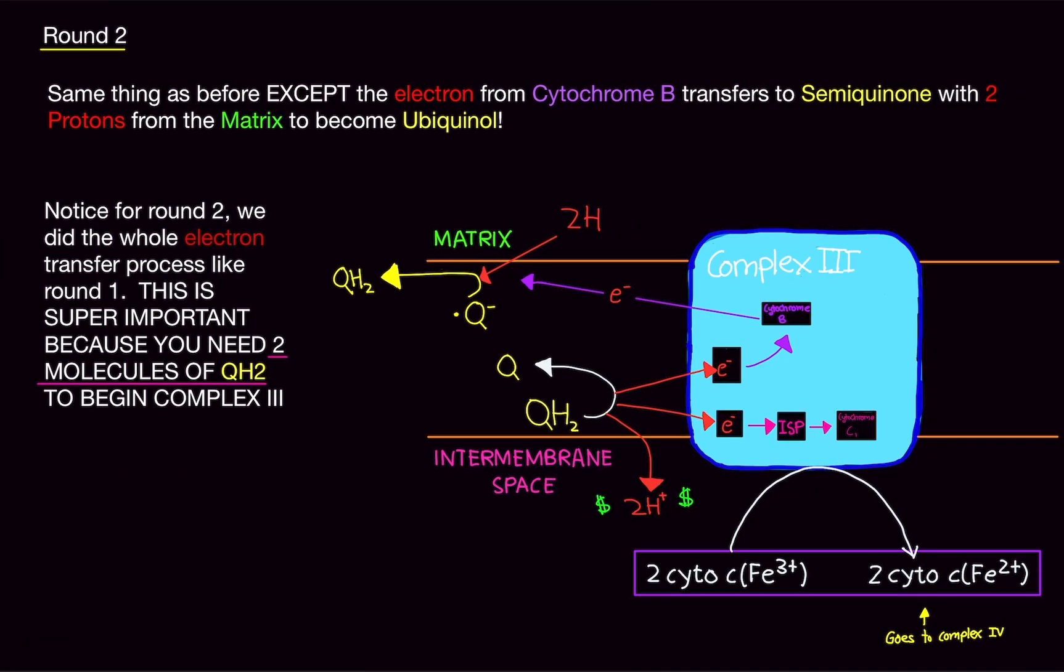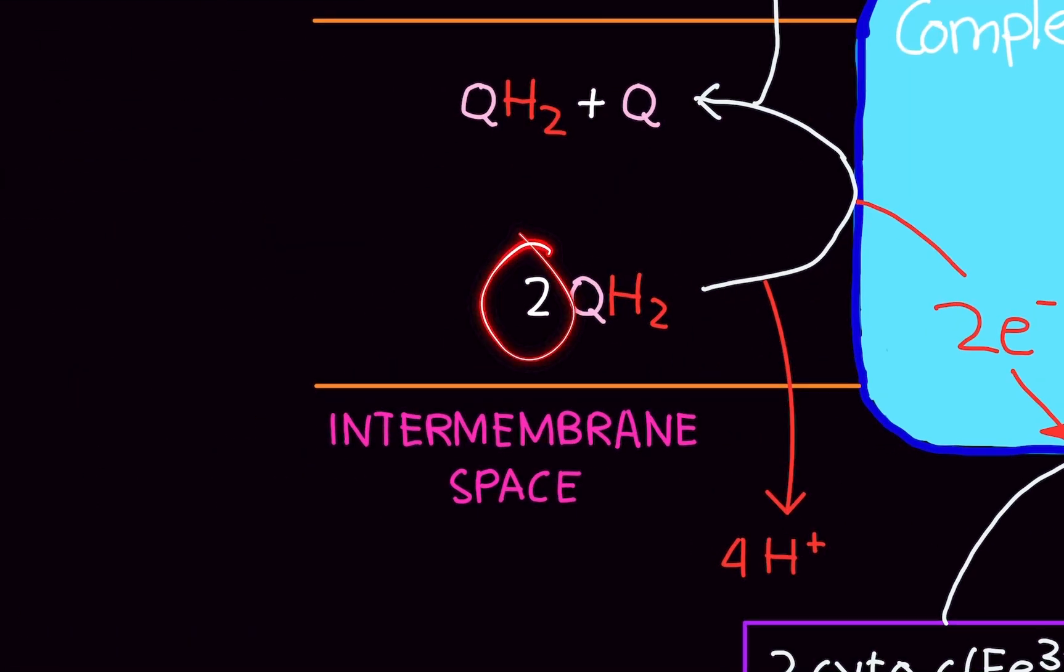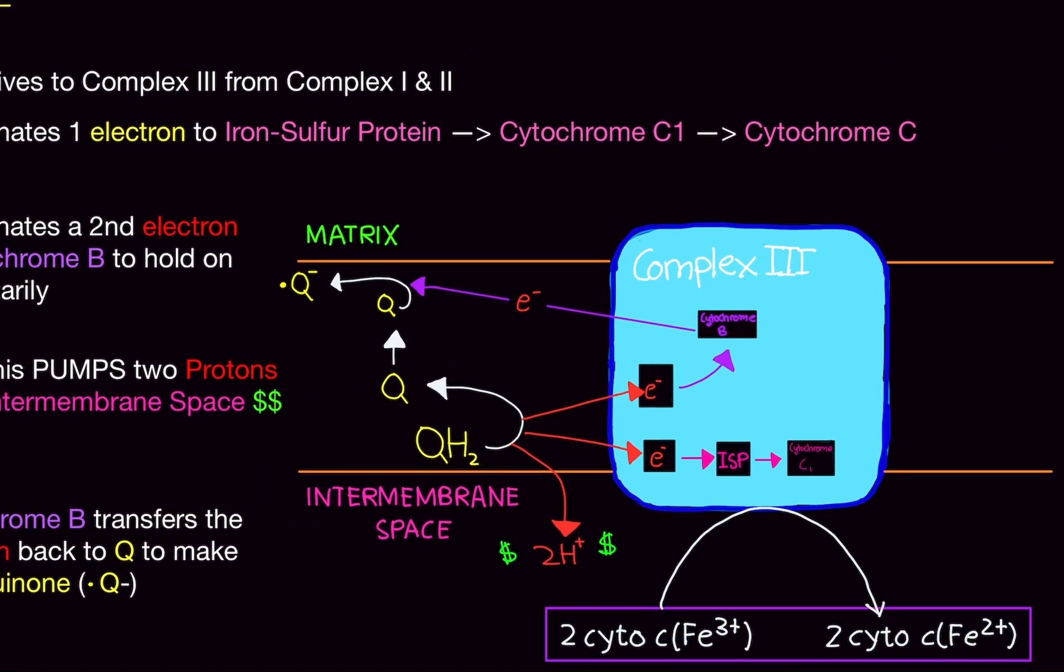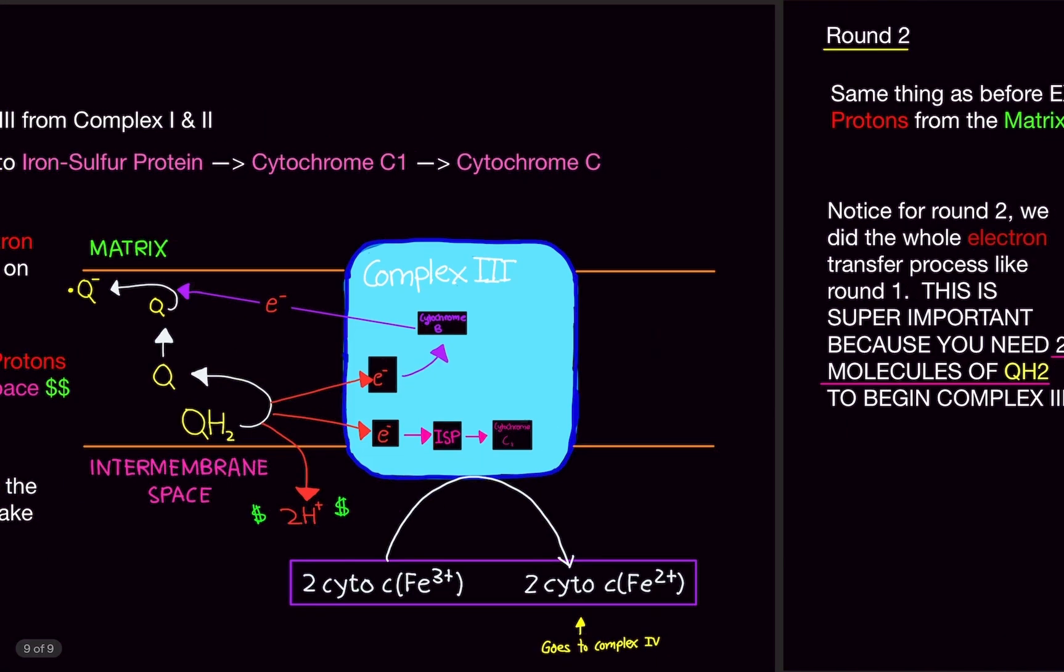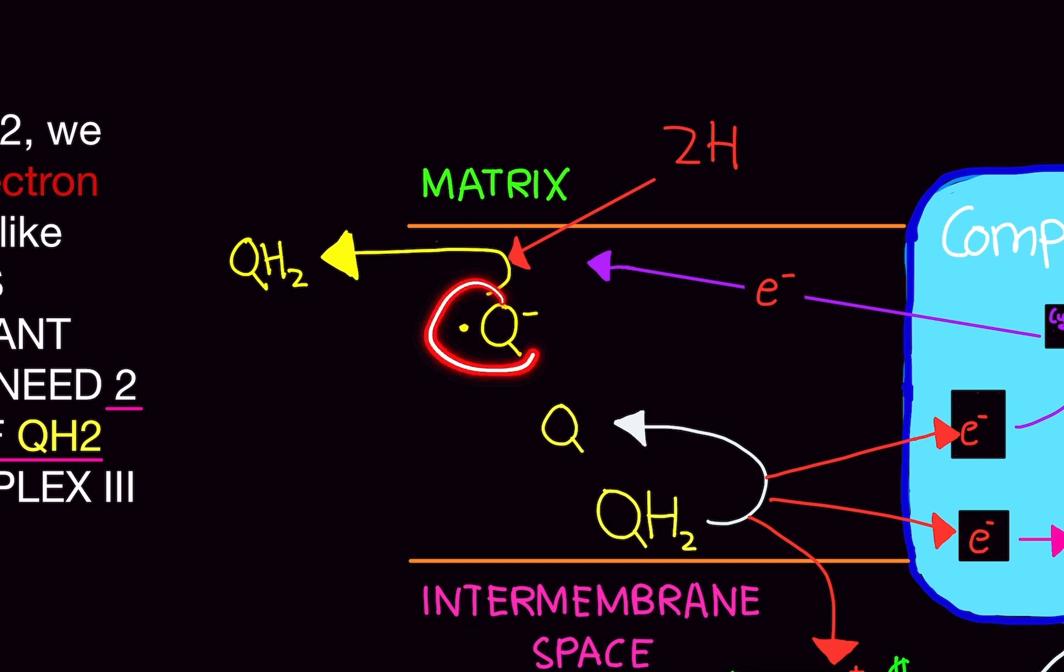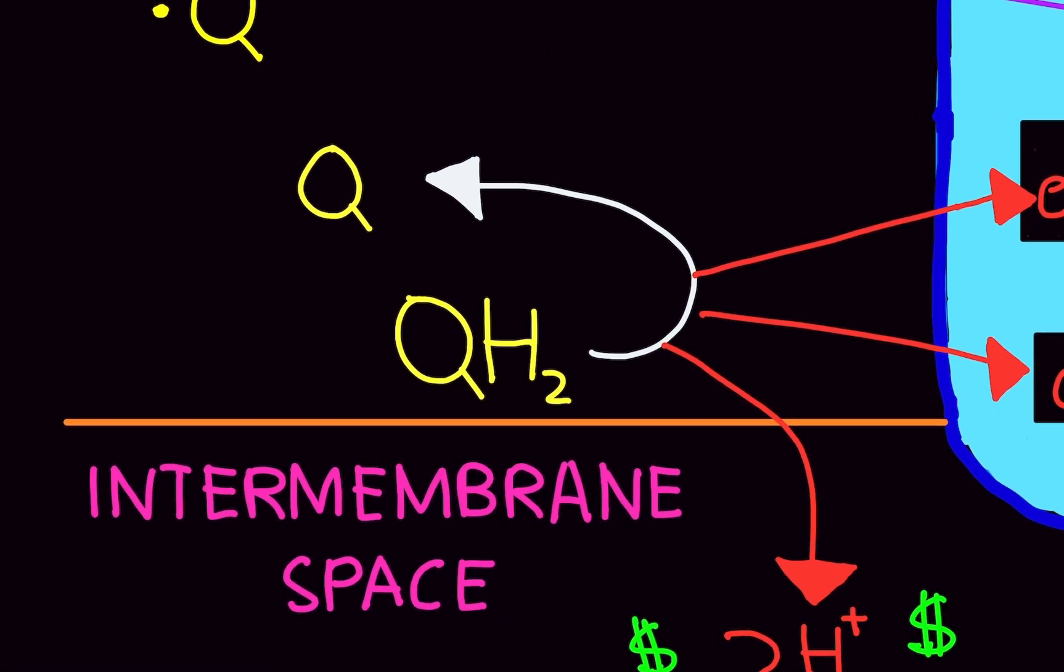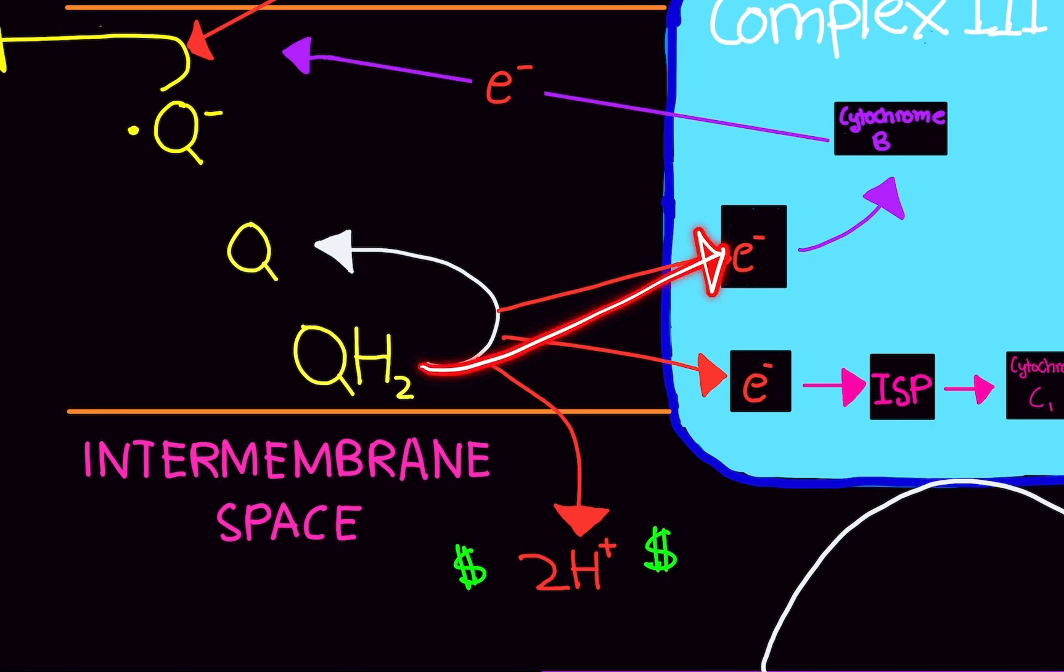Now, you'll notice, this is why I mentioned you need two molecules. So, we end with round one with a semiquinone, which is really bad. It's a radical. It's an ex we don't like. So, in order to get rid of the semiquinone, this radical, we need to shove in another ubiquinone, take, shred off its electrons.